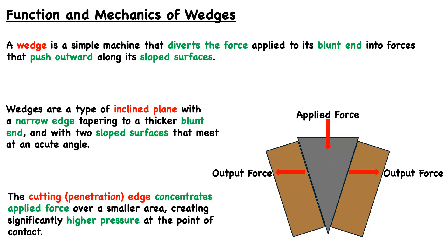For example, in the illustration we're looking at here, this is as if a wedge has been forced through a piece of wood. In order to initially enter the wood, the wedge concentrates a lot of force at the tip in order to penetrate the wood. Then, when further force is applied, that force will go outward to split the wood and travel further downwards.